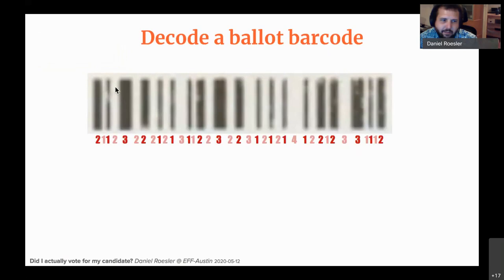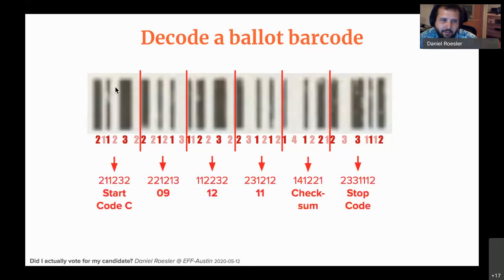The cool thing is you'll always end on a set of numbers adding up to 11 — those are your characters. Going down and looking up those characters in the Wikipedia table, I can say: that's the start code C — I know what column to look in — then I have three characters, a checksum, and a stop code. Those characters translate to 09, 12, 11. That's what's on your ballot that gets read by the computer and actually casts your vote.